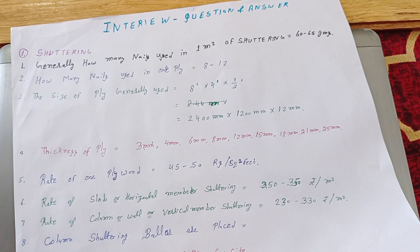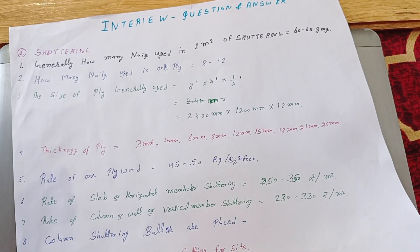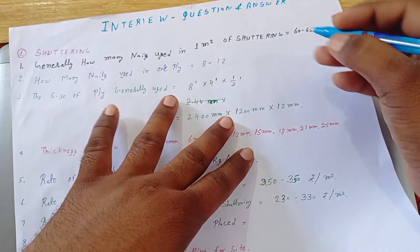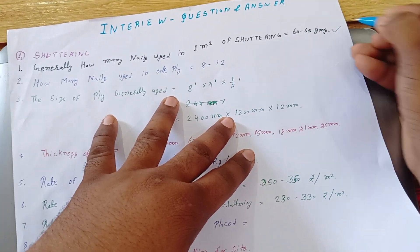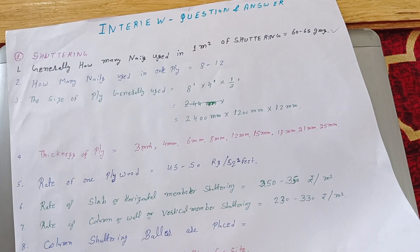So first we have discussed about shuttering. In general, questions ask how many nails used in one meter square of shuttering. So generally use 60 to 65 grams per nails used in one meter square of shuttering.